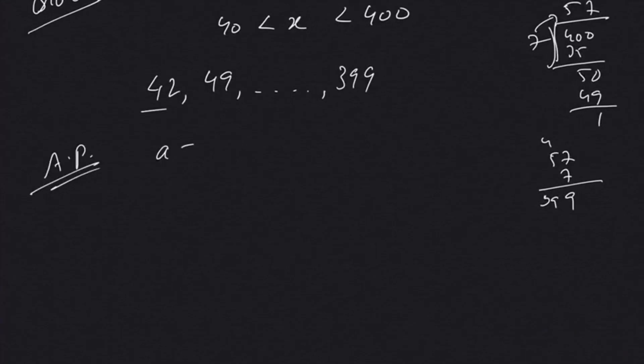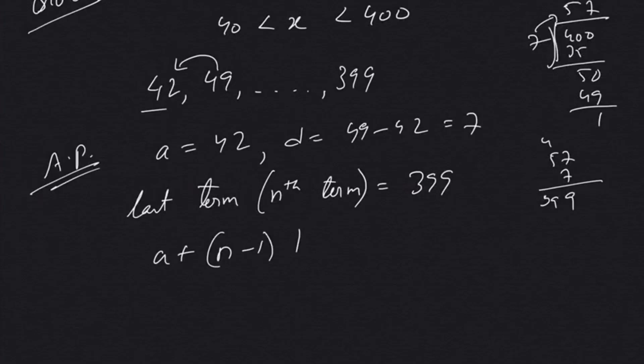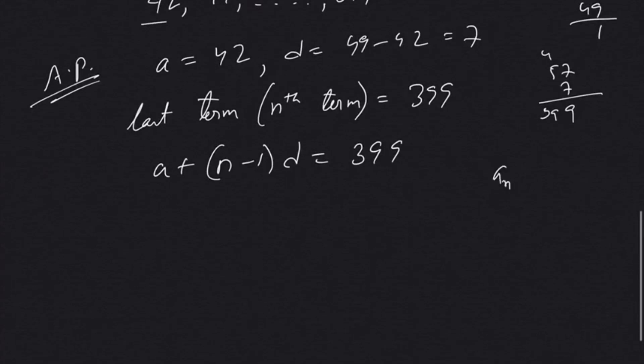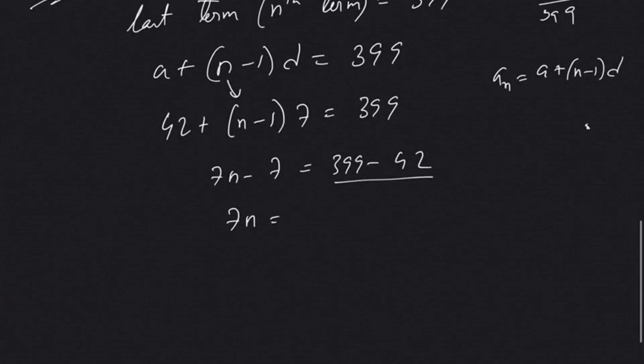Common difference is 49 minus 42, which is 7. And the last term, which is the nth term, is 399. The nth term as we know for an arithmetic progression is given by a + (n-1)d. a we know is 42, n we have to find out—n represents the number of terms. Common difference is 7. So 42 + (n-1)7 = 399. 7n - 7 = 399 - 42. So 7n = 399 - 42 = 357. 399 plus 7 is 406, and 7n = 406, so n equals 406 divided by 7.